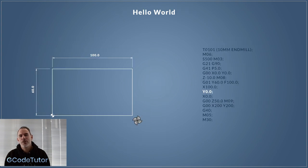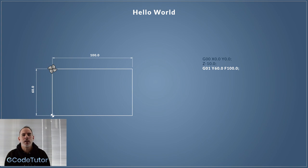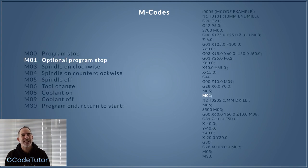During the course we write four complete programs, during which I explain line by line, G-Code by G-Code, exactly what I'm doing and why I'm doing it.